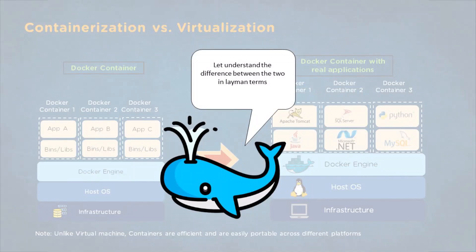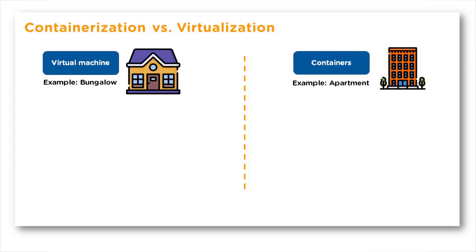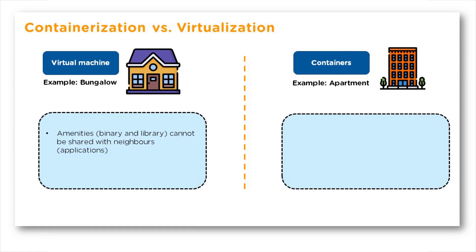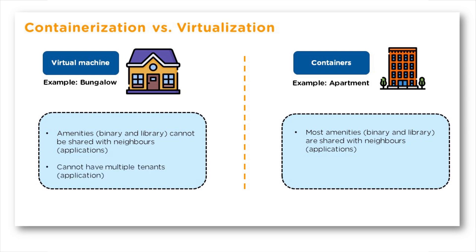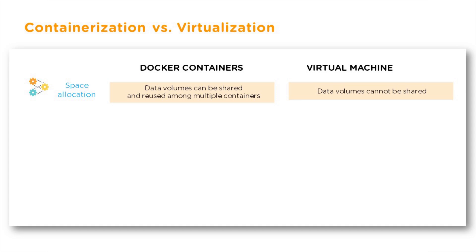In a bungalow, amenities like water, lift, and roof cannot be shared with neighbors — likewise, a VM is less efficient and doesn't share its resources with other applications. Containers, on the other hand, share their binaries and libraries with neighboring containers just like residents in an apartment. The bungalow is owned by a single person and cannot have tenants — likewise, VMs cannot run multiple applications — while Docker runs multiple containers just like numerous tenants reside in a single building.